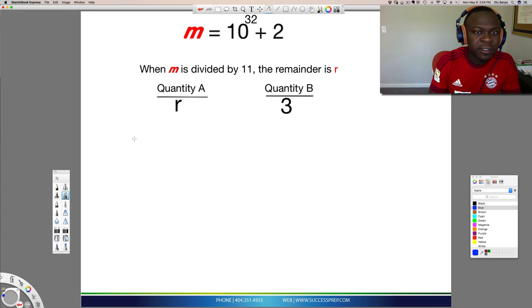So the question tells us that 10 to the 32 plus 2 is divided by 11. And the question is asking us that the remainder that this division gets is going to be your R. They want us to compare that to 3. All right, so let's jump right into this question.